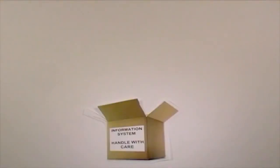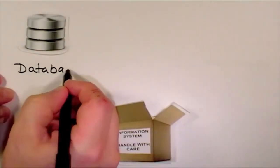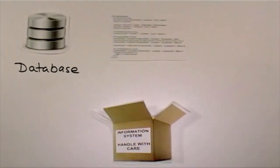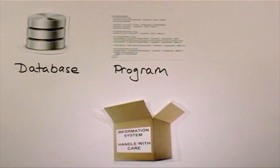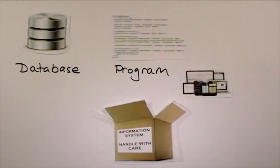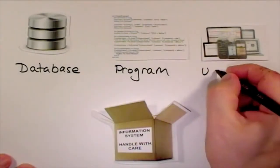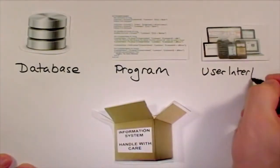A typical information system will have somewhere to store the data—often this is a database. There will be a program which helps you use the data, and the program will have a user interface where you, the user, issue commands and receive the results.